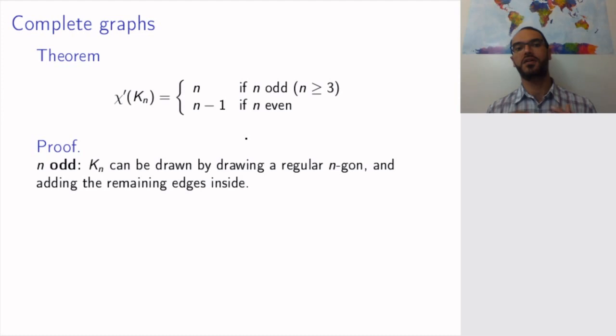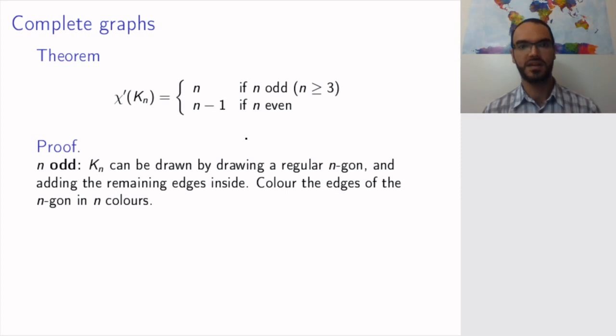So let's start with the case of odd number of vertices. So how do you usually draw the complete graph on n vertices? You draw a regular n-gon like a pentagon if it's K5 and then you add the remaining edges inside the n-gon. So you can always color the edges of the n-gon in n colors. So first we're going to show that n colors are in fact enough and then we'll show that you actually need n colors. So remember the statement that the chromatic index is equal to n says two things. It says that it is possible to color the graph with n colors for the edges and it's impossible to color it with fewer colors. So let's first show that it's possible.